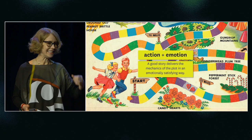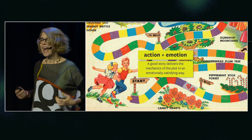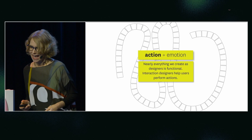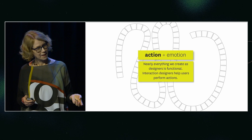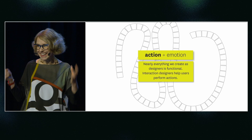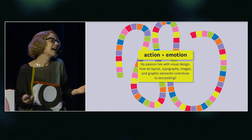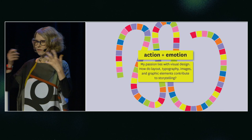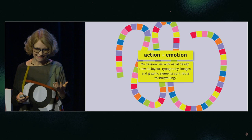Every good story needs two things. It needs action — something's going to happen, something gets done — and it needs emotion. It needs that satisfaction and joy and sometimes pain and sorrow that we get from a story. As designers, we create opportunities for action. That's the plot. It's the function. It's the thing that has to get done. And we also wrap that up in emotion — atmosphere and color and sensory detail — not an actual story, but the satisfaction of a story.